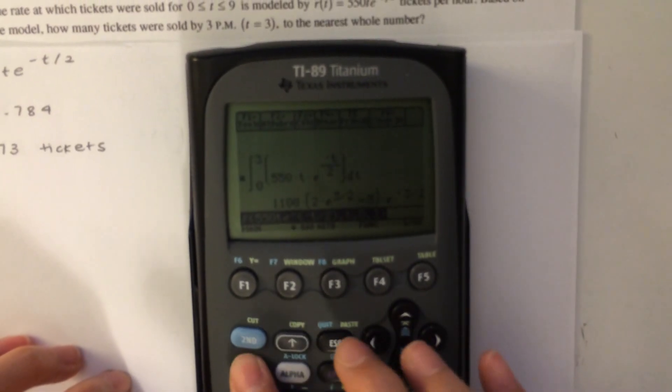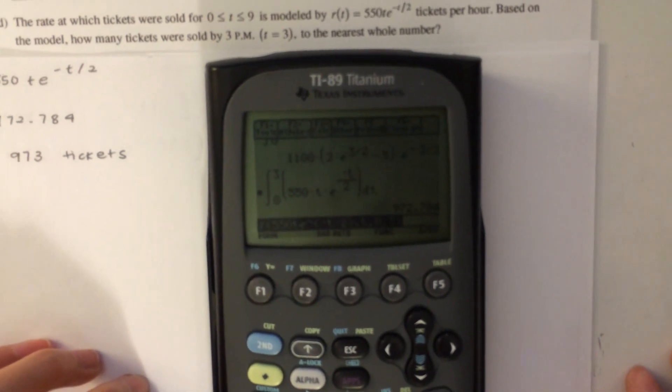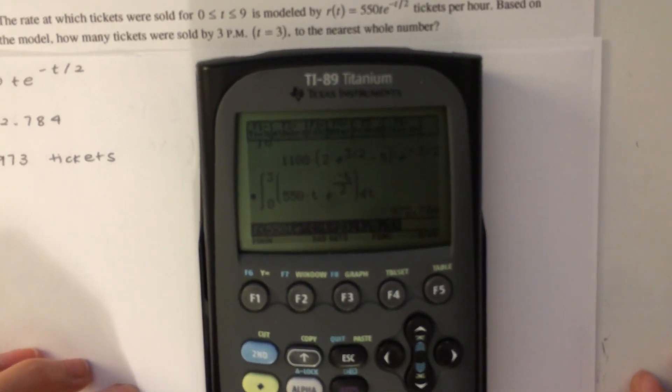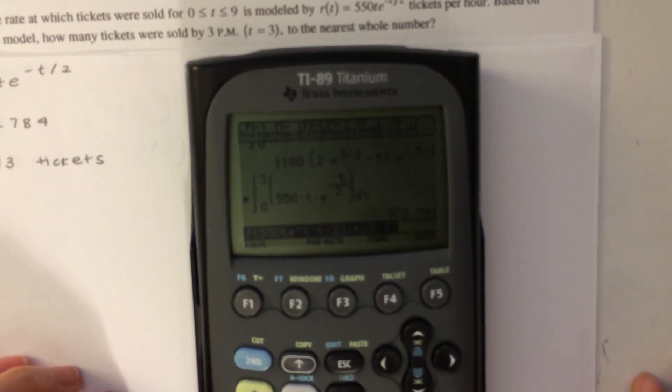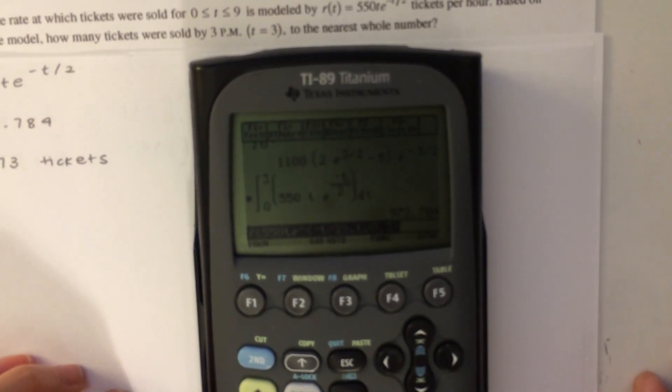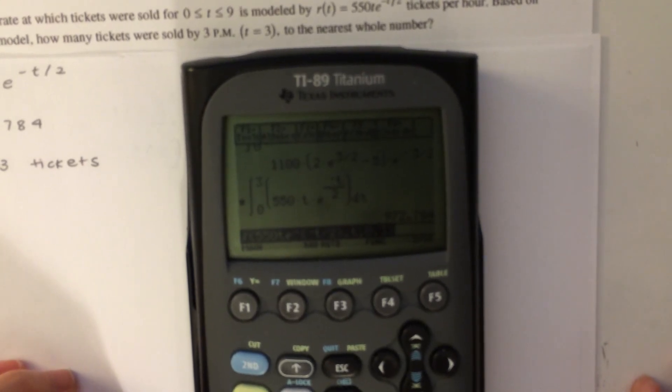And then we approximate, and that gives us 972.784. However, the question tells us to round to the nearest whole number, so the answer is 973 tickets.